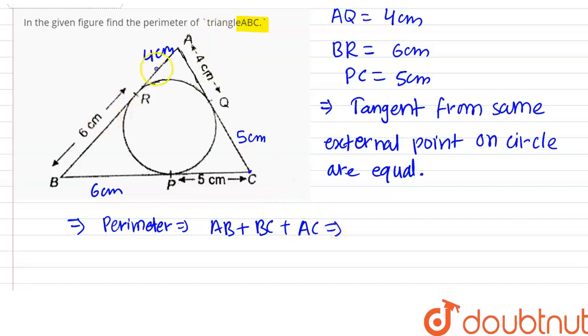And AB is 6 plus 4, so this is 10 centimeter plus BC equals 6 centimeter plus 5 centimeter.